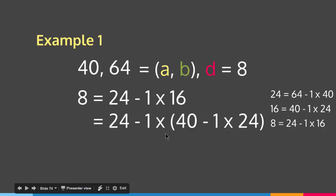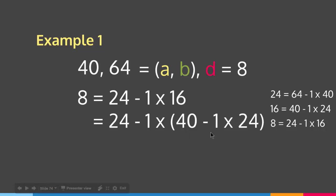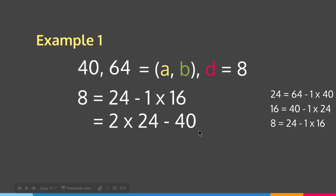Let's simplify. We have 24 minus (40 minus 24). The minus times 40 gives minus 40, and minus times minus 24 gives plus 24. So this becomes 24 minus 40 plus 24, which equals 2 times 24 minus 40. Still, we need to substitute 24 equals 64 minus 1 times 40.